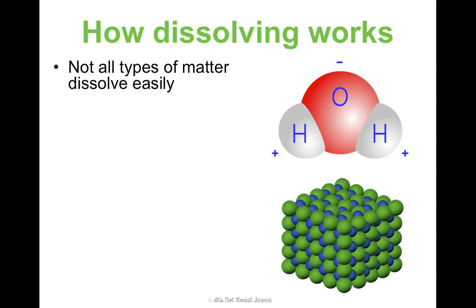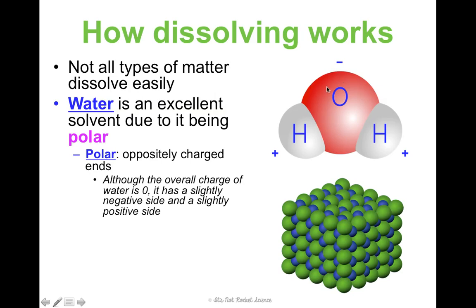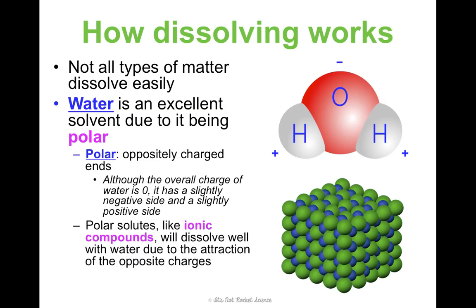Not all types of matter dissolve super easily. Water is very special and has a lot of unique properties we'll get into more in biology. One of those is that it's a really good solvent because it's polar — meaning it has oppositely charged ends. Overall water has a neutral charge of zero, but the oxygen side of H₂O is slightly negative and the hydrogen side is slightly positive. That polarity means polar solutes, like ionic compounds such as sodium chloride, dissolve really well in water because they are also polar — there's an opposite-charge attraction that pulls them apart.